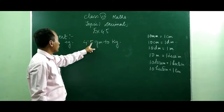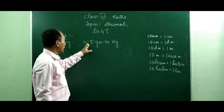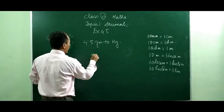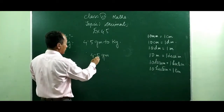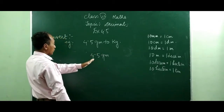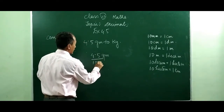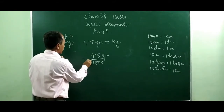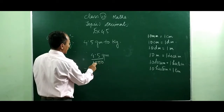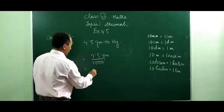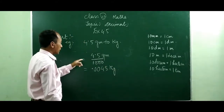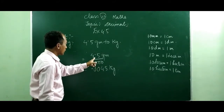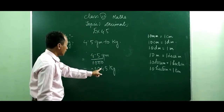One example not present in your book: convert 4.5 grams to kilograms. We are going to convert gram to kilogram. Kilogram is on the left side and gram is on the right side. Since gram is on the right side, when we convert it into kilogram we divide by 1000, since kilogram is in the thousandth place. There are three zeros, so the decimal will shift to the third place. So 4.5 grams equals 0.0045 kilograms.